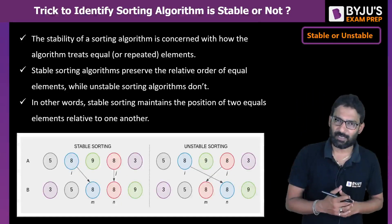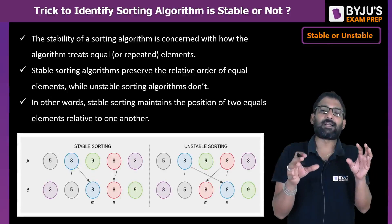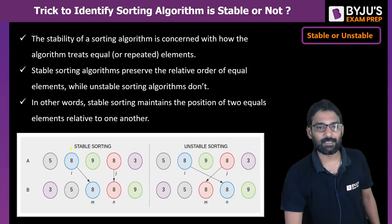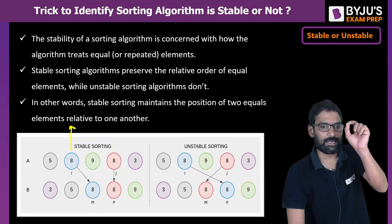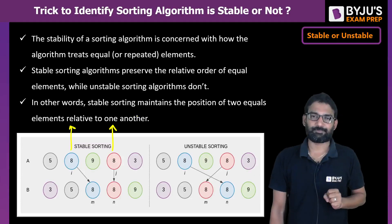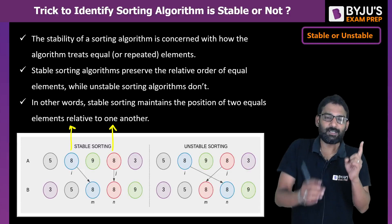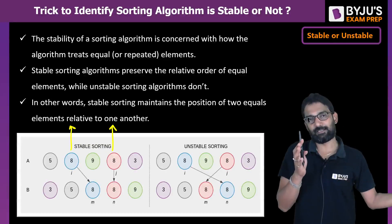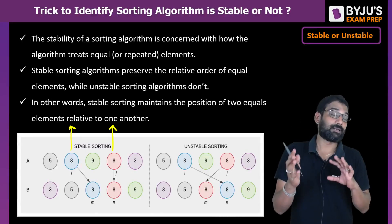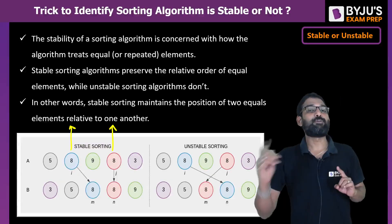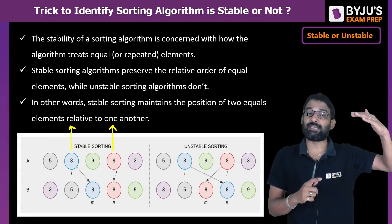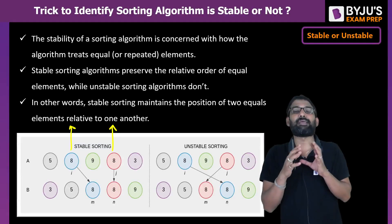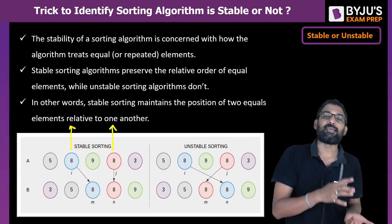Stable or unstable means: in the list, when there are duplicate elements, their relative position is preserved. For example, there is a blue-circled 8 and an orange-circled 8. Throughout the sorting procedure, the blue-circled 8 should appear before the orange-colored 8 — not necessarily in the same position, but relatively the blue color should remain before the orange color, just as in the initial list.